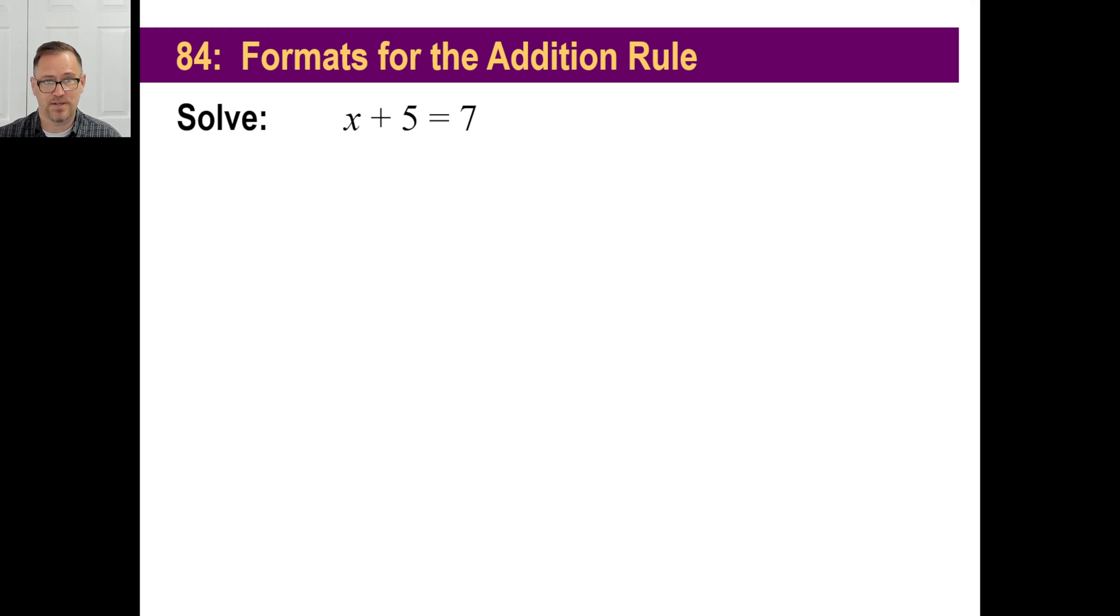Alright, let's solve this. The addition rule, of course, when we have a positive 5 sitting next to that x, we don't want it. We're going to subtract 5 here. We subtract 5 here. We have just x left over and we have 7 minus 5 on the right side. There you go.